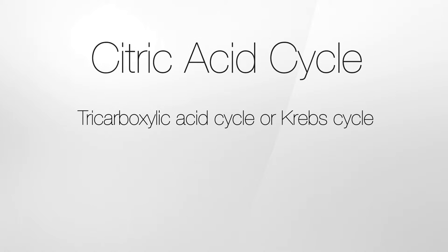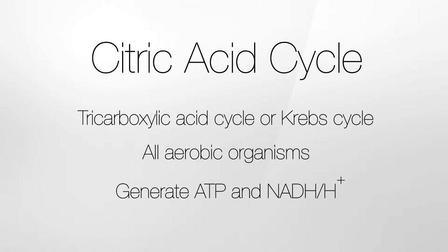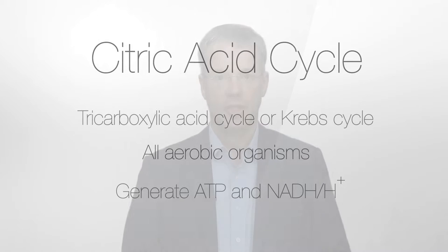The Krebs cycle is found in all aerobic organisms. The purpose is the generation of energy from pyruvate, the product of glycolysis, and the production of electrons and protons in the form of NADH, which goes into the oxidative phosphorylation. The Krebs cycle is a chain of enzyme-catalyzed reactions in which pyruvate is completely converted to carbon dioxide, and electrons and protons via the cycling of oxaloacetate through citrate.